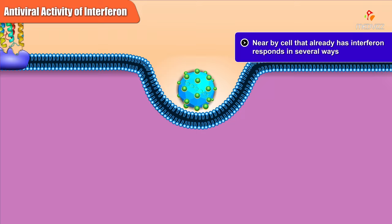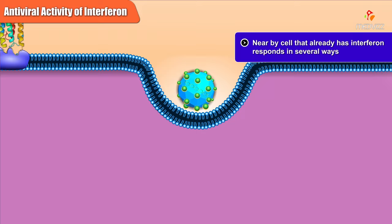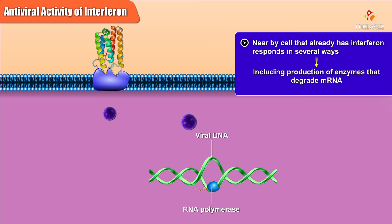The nearby cell that already has interferon bound to its surface responds in several ways, including production of enzymes that degrade messenger RNA and prevent protein synthesis. Thus, a virus can attach and enter the cell, but completion of the viral replication cycle is prevented.